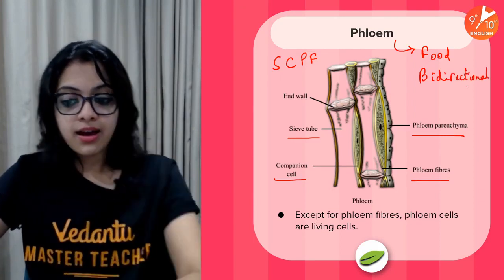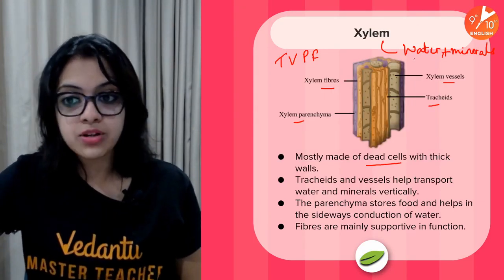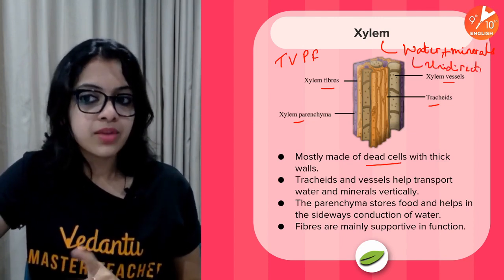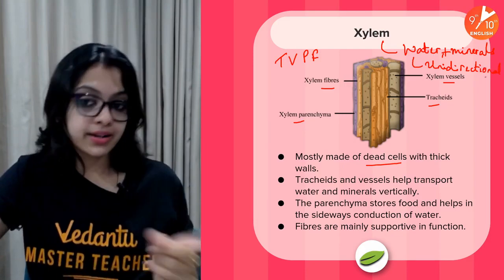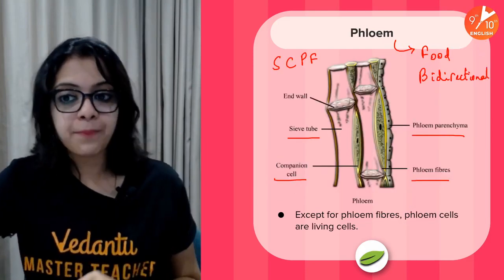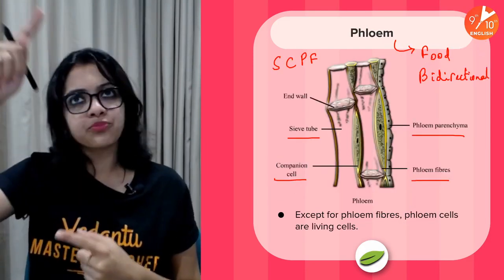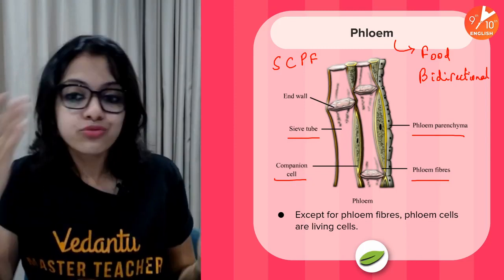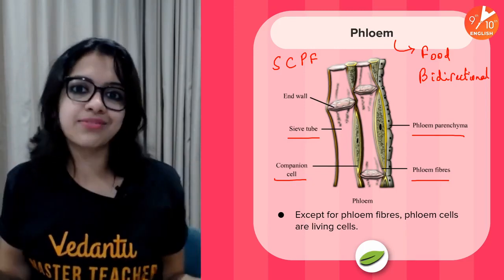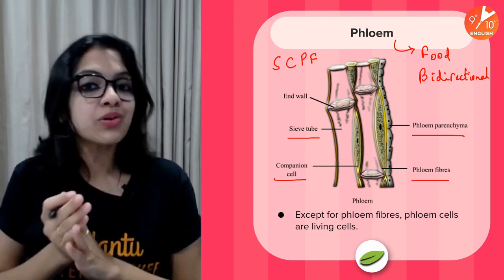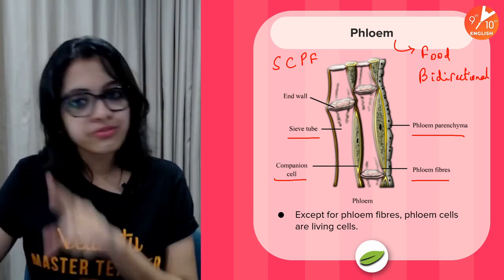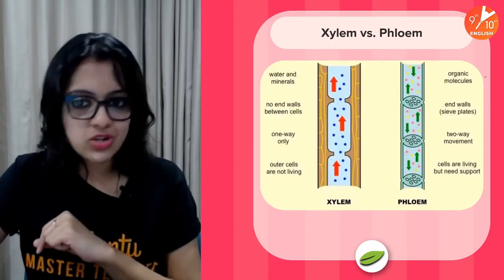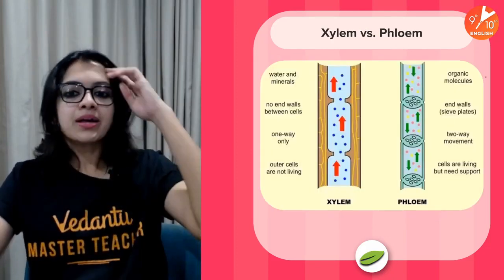The main function of phloem is to transport food. Phloem transports bi-directionally — from the leaves either upward or downward, depending on where food is required. Xylem, in contrast, transports unidirectionally, only from the roots upward. Any interesting mnemonic for SCPF? Post it in the comments!